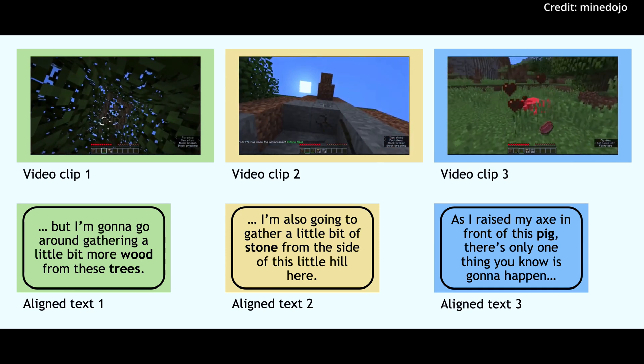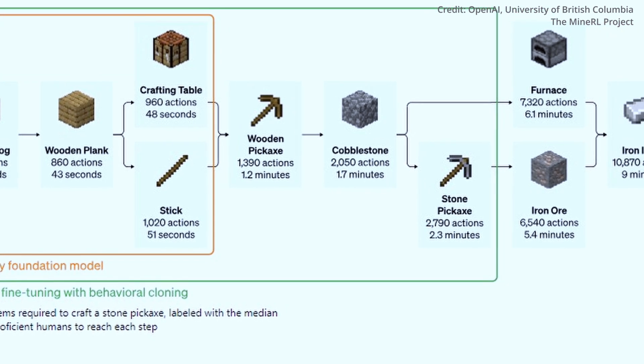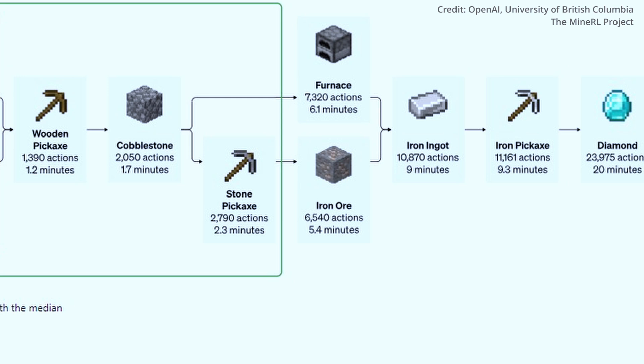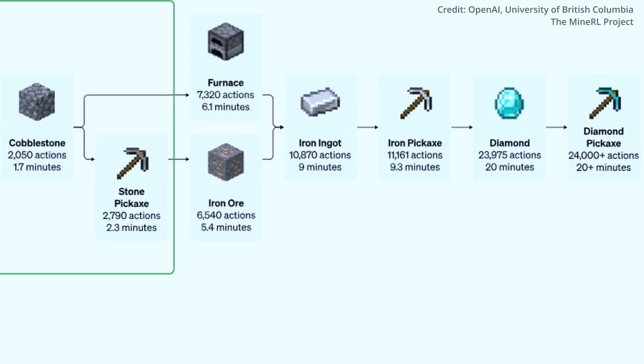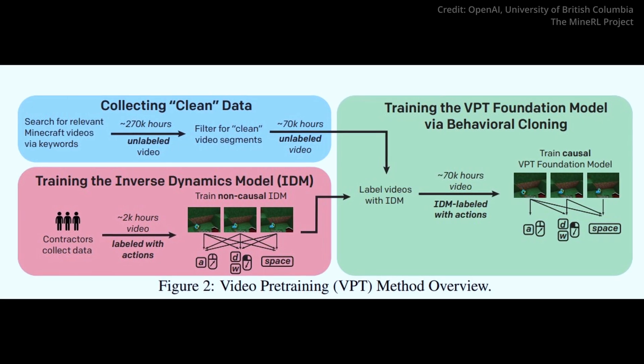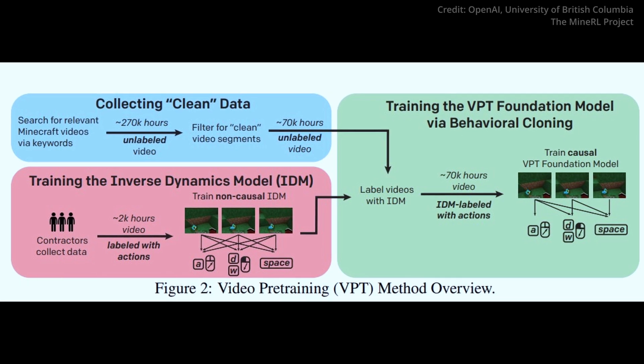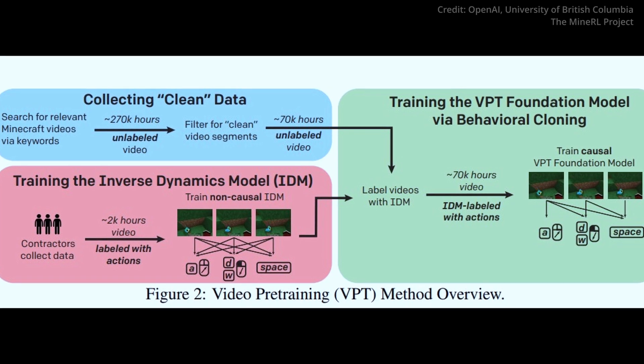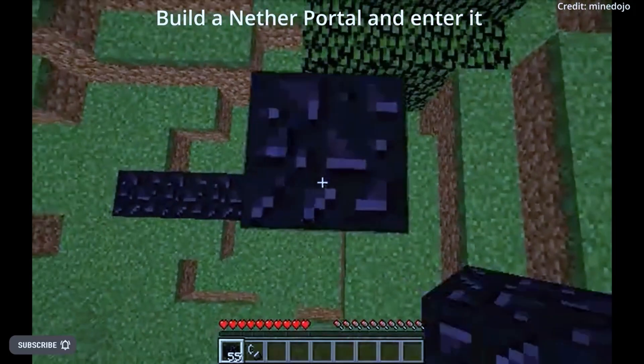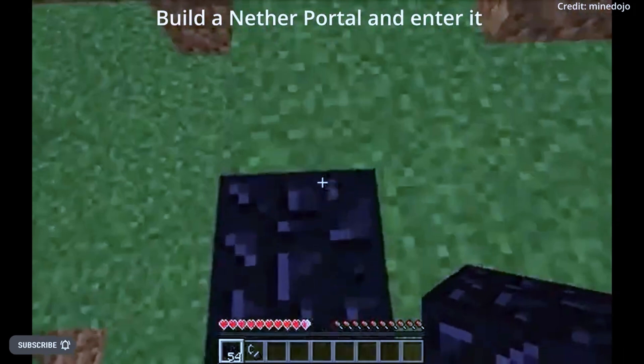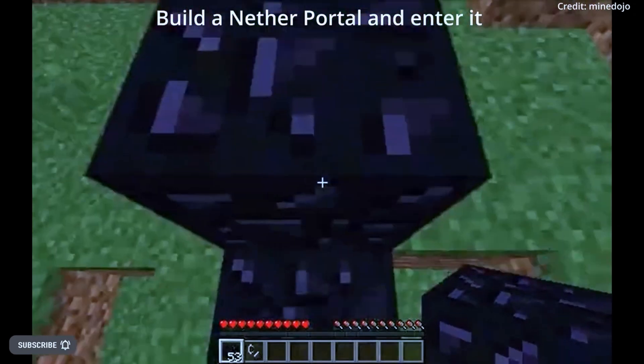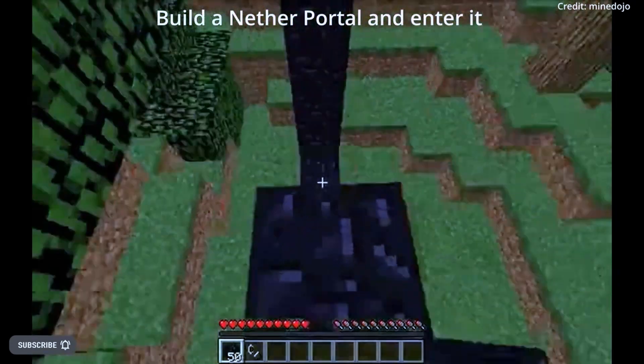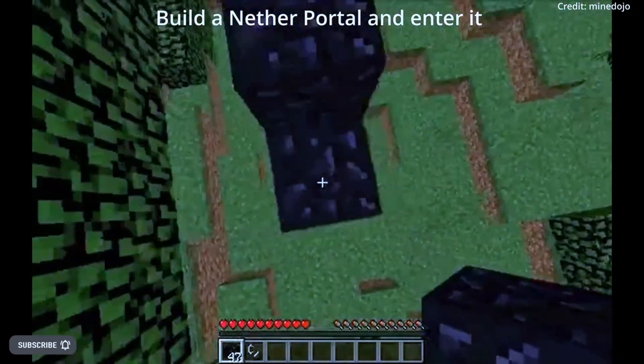Next, OpenAI set the stage for an even grander challenge, crafting a diamond pickaxe. Reinforcement learning was combined with a pre-trained and fine-tuned VPT model. The AI agent, now rewarded for each step towards the diamond pickaxe, showcased a significant improvement compared to standard reinforcement learning agents. The model's progress was phenomenal, crafting iron pickaxes 80% of the time, while crafting diamond pickaxes 2.5% of the time, making it on par with an average human player.